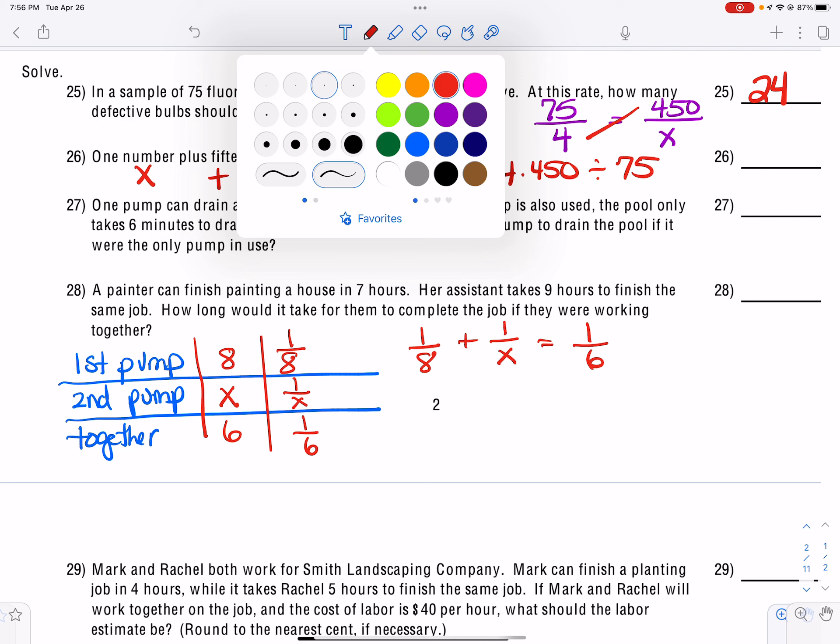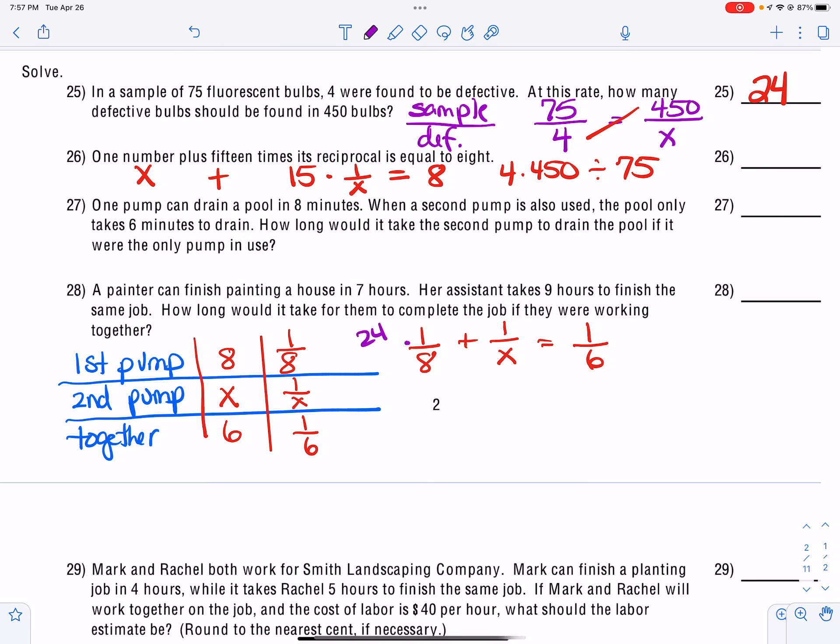And then we also have to have the X represented. So we're going to multiply everything by 24X. And so that goes in and leaves 3. So that becomes 3X. The X's cancel and that leaves me 24. And then 6 goes into 24 and gives me 4. So that equals 4X. So then I would subtract the 3X from both sides. And so that tells me that the second pump would take 24 minutes by itself. So that was number 27.